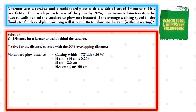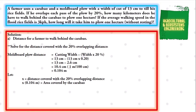If you want, we can convert it to meters using the conversion factor: 1 meter is equal to 100 centimeters. We multiply and we have a final value for our moldboard plow width of 0.104 meters. Next, we let x be the distance covered with the 20% overlapping distance. And x multiplied by 0.104 meters be the area covered by the carabao.